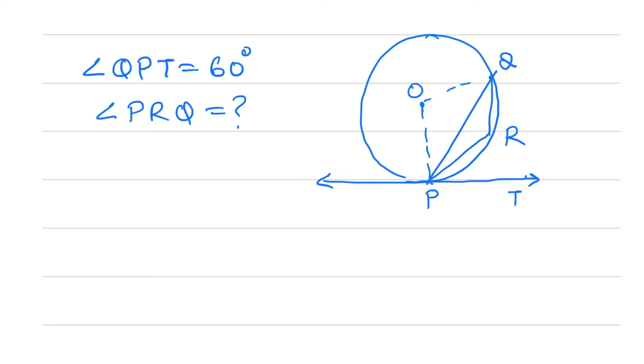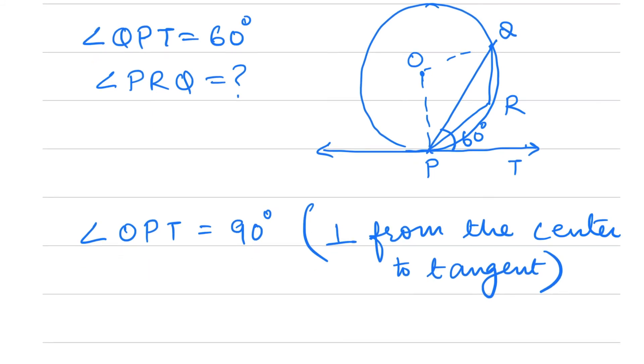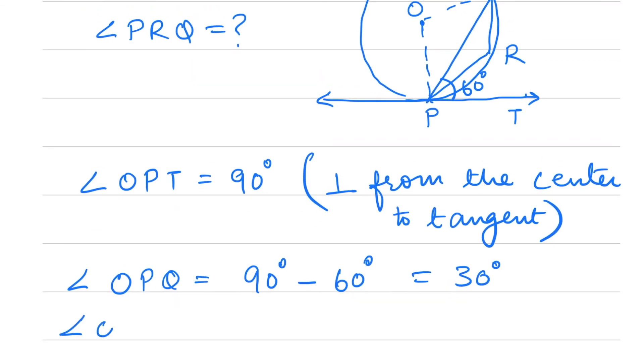Angle QPT = 60°. We know angle OPT = 90° because the radius is perpendicular to the tangent. So angle OPQ = 90° - 60° = 30°. Since OP = OQ (radii of the circle), angle OQP is also equal to 30°.